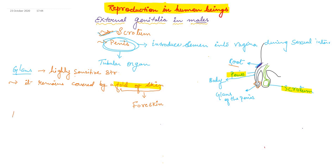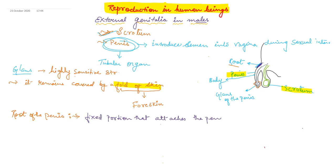The root of the penis is a fixed portion — it attaches the penis to the body wall. It provides a connection between the body wall and the penis.